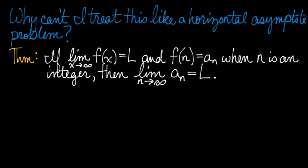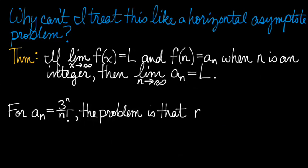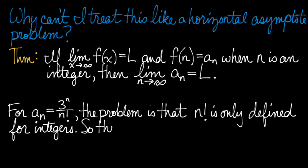That makes certain problems in this section very easy. Here's the problem, though. Factorials are only defined for integers, like there's no such thing as 3 quarters factorial or pi factorial. There is no such thing, which means there's no such f, which means this theorem is not helpful.